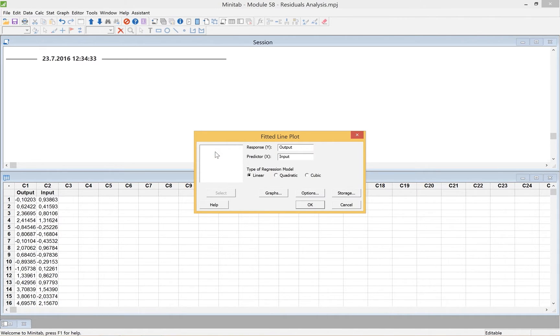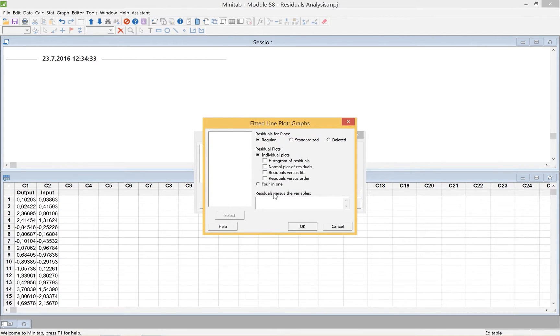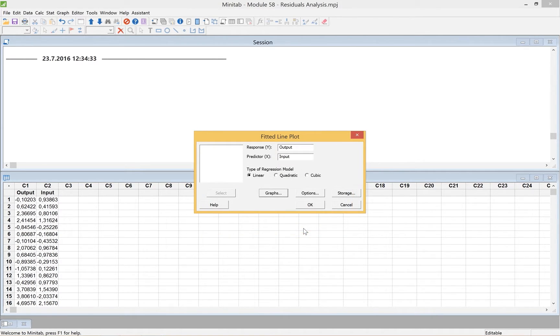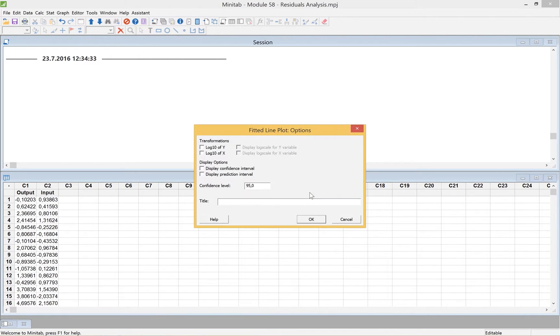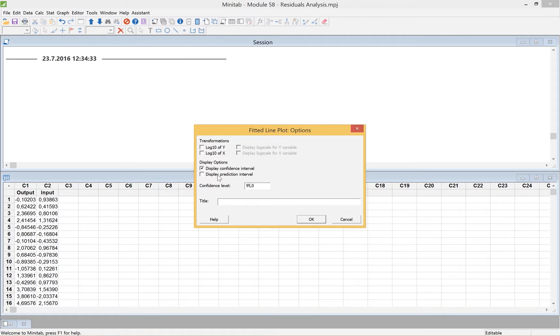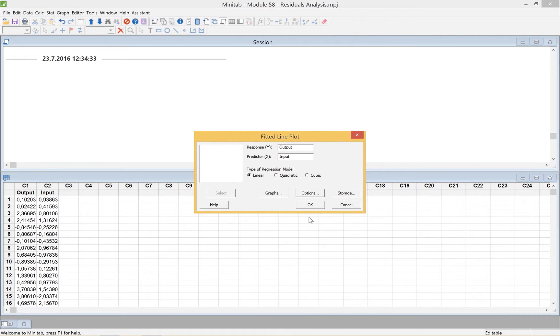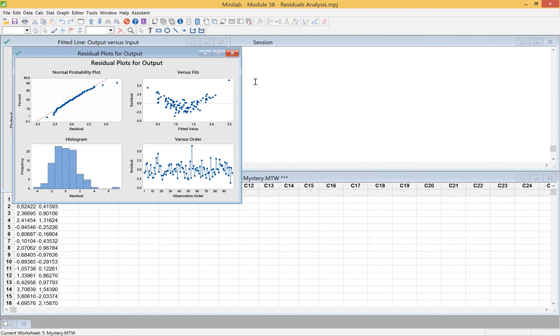Now I'm going to break my rule because I just want to show you the linear analysis. We come to Graphs and I'm going to plot the 4-in-1 graph, which is the residuals analysis. I'm going to take a look under Options and do both the confidence interval and the prediction interval. We click OK and then click OK again.